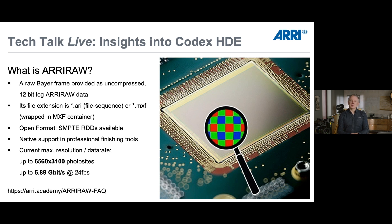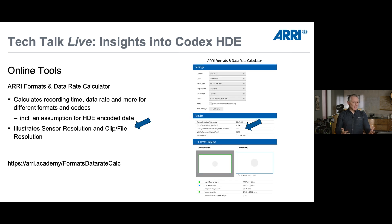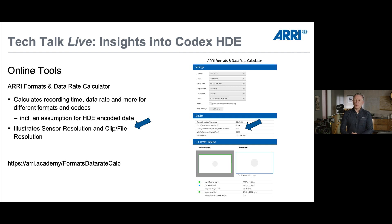If there's anything you'd like to know about ARRI RAW, there's a FAQ section on our website with a link in the description. To get an idea of how heavy a given camera flavor is, you can use our online ARRI Formats and Data Rate Calculator, which also shows the amount of data in both flavors — uncompressed ARRI RAW or the HDE-encoded flavor — so you can figure out if there's a significant saving for your project.